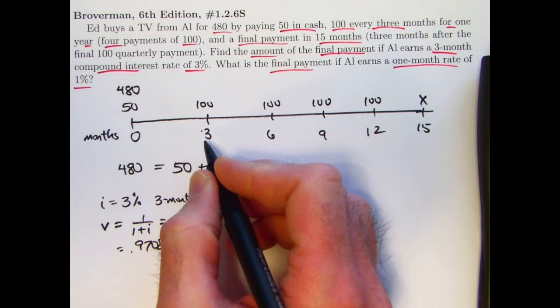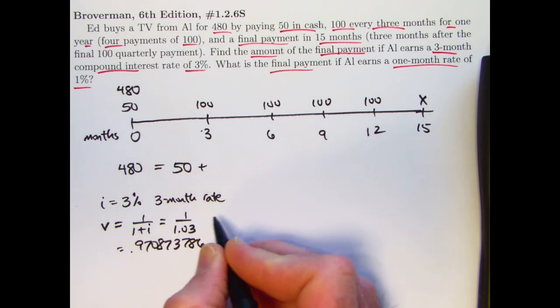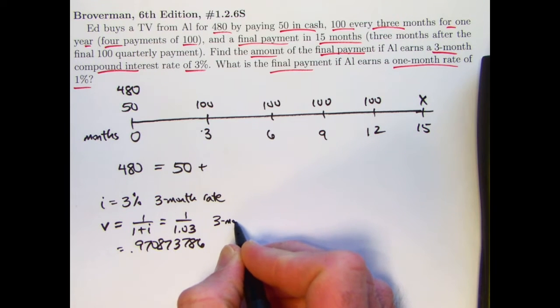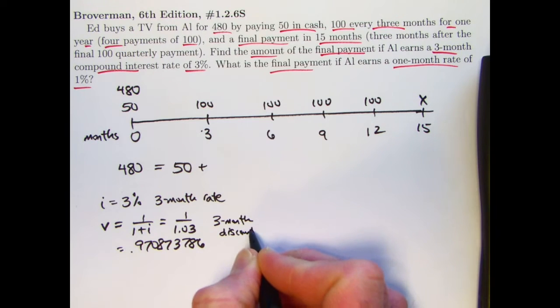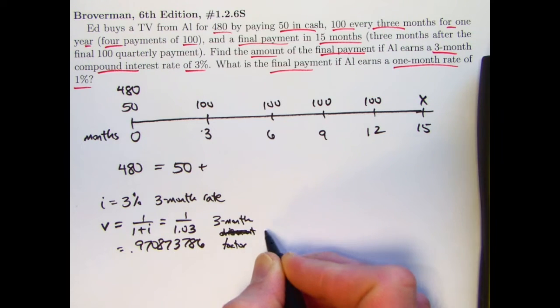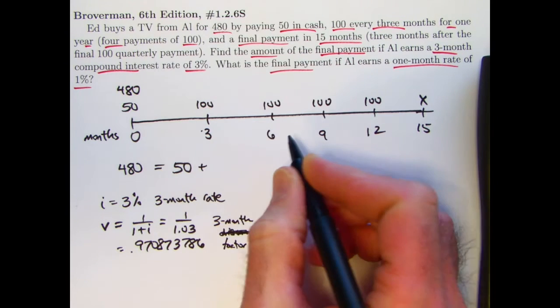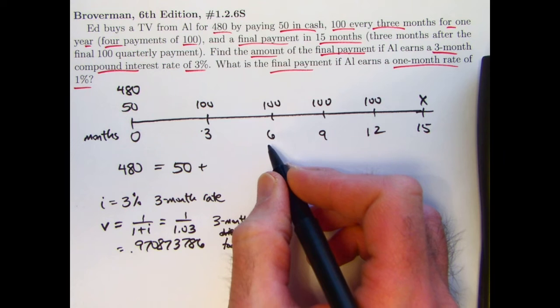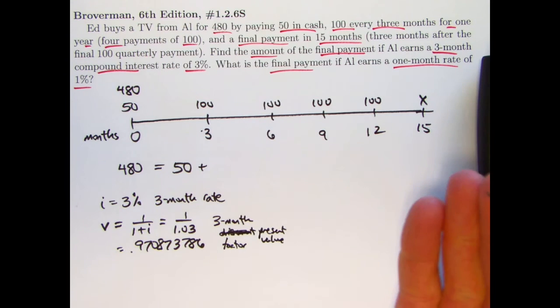But these 100 payments do need to be discounted back in time. I need to effectively pull them back to the present by multiplying by powers of V. The first one would be multiplied by V because, since i is a three-month rate, V would also be a three-month thing. It would be a three-month discount factor or present value factor. Actually, it's probably better to call it a present value factor.